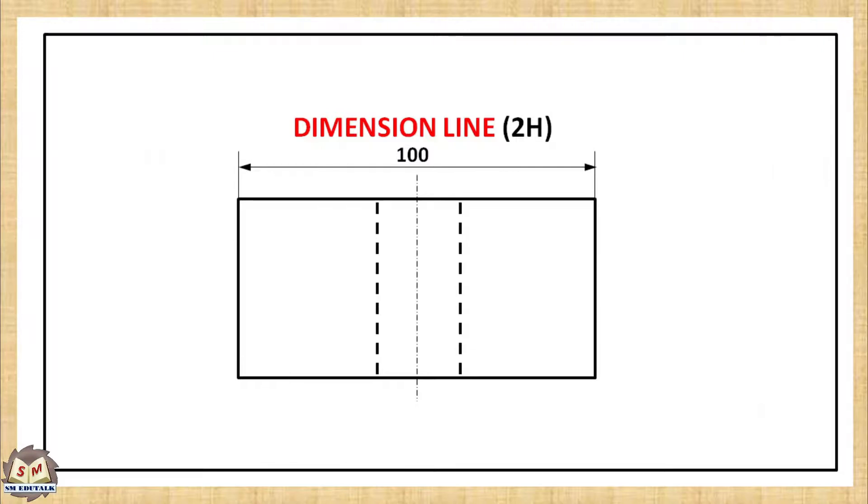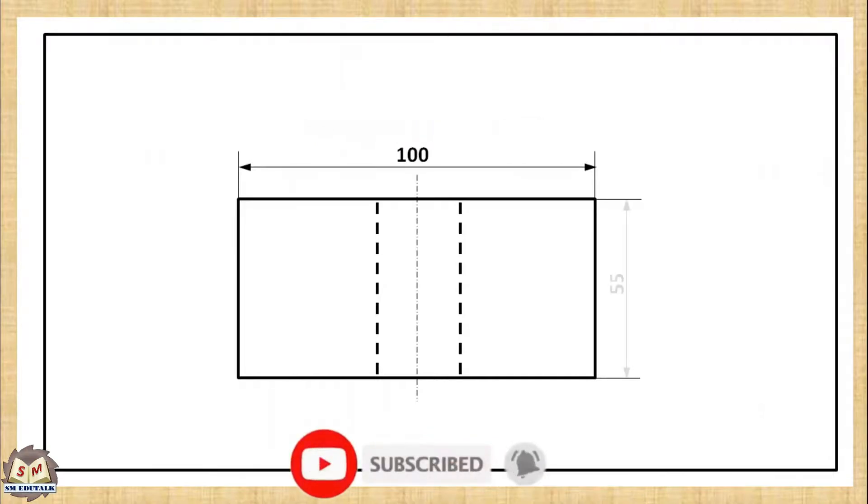But the arrowheads and dimension ticks of the dimension line should be drawn by HB pencil. Now you can see how the height of the rectangle is represented by two extension lines and a dimension line.